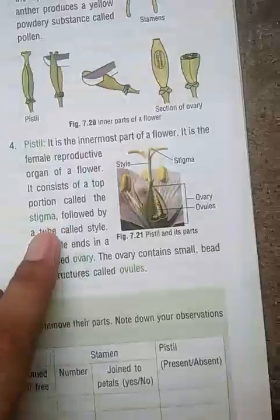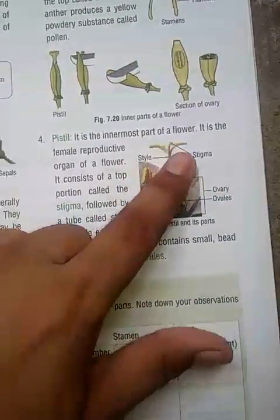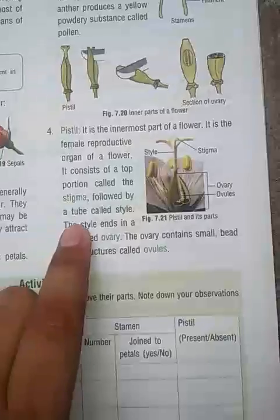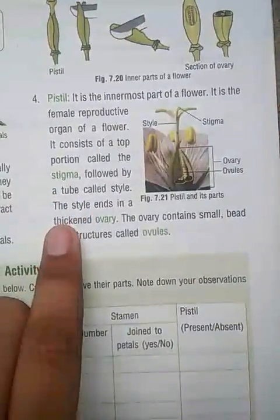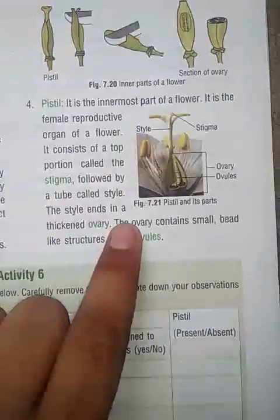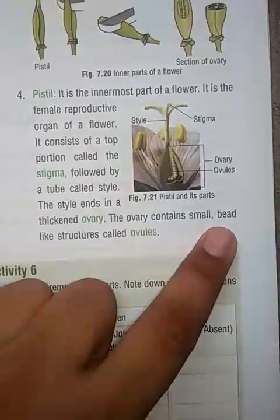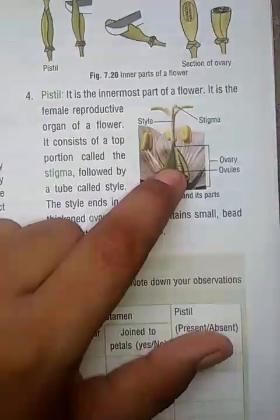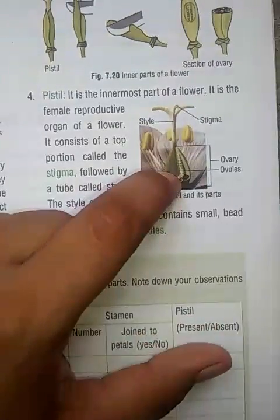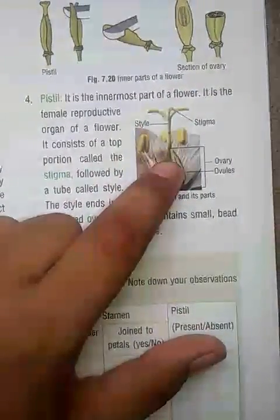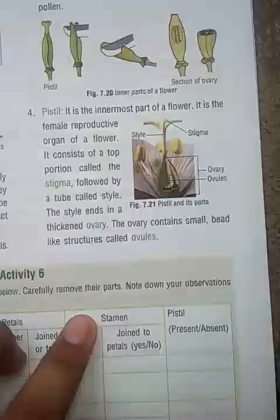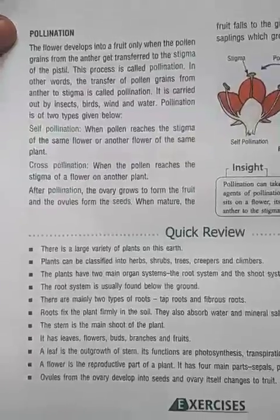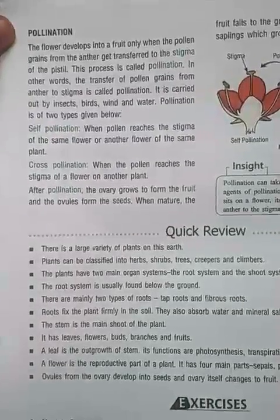Below the stigma is the style, and then the ovary. The ovary contains small bead-like structures called ovules. This is also known as the egg. So the parts of the flower are: sepals, petals, stamens, and pistil.